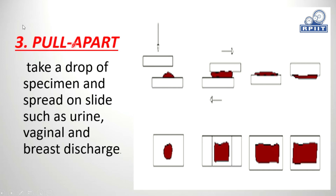The third method is pull apart. Take a drop of specimen and spread it on the slide — this is used for specimens such as urine, vessel discharge, and waste discharge. We will spread it with the help of two slides, then prepare the smear with urine and vessel specimens.